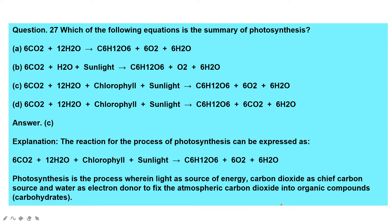The photosynthesis equation: six molecules of carbon dioxide plus 12 molecules of water, in the presence of chlorophyll and sunlight, gives rise to glucose (C6H12O6), six molecules of oxygen, and six molecules of water vapor. Photosynthesis uses light as energy, CO2 as carbon source, and water as electron donor to fix atmospheric carbon dioxide into carbohydrates.